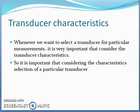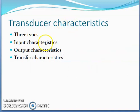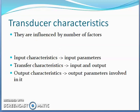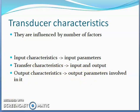There are mainly three types of characteristics. The first one is input characteristics, the second one is output characteristics, and the third one is transfer characteristics. These characteristics of transducer are influenced by various factors. Input characteristics are influenced by input parameters, transfer characteristics are influenced by both input and output parameters, and output characteristics involve output parameters.